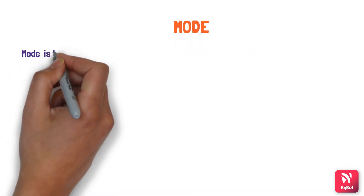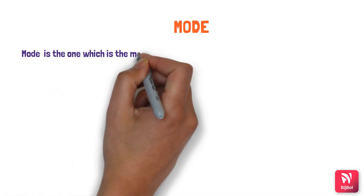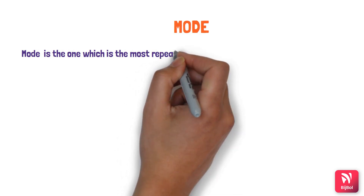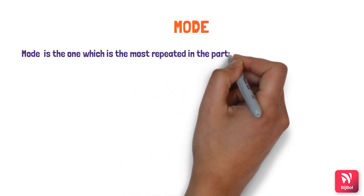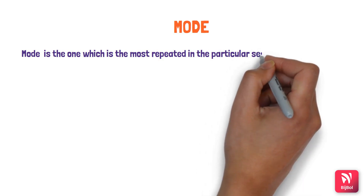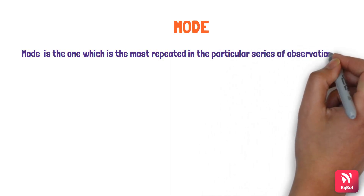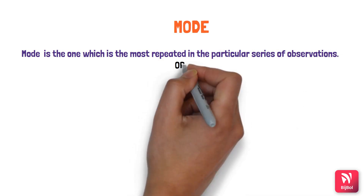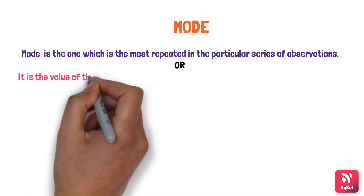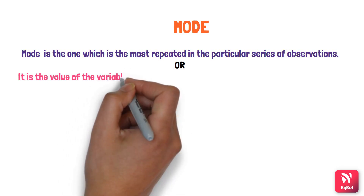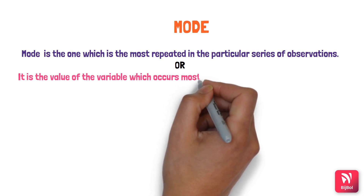The next measure is the mode. The mode is the value that is most frequently repeated in a particular series of observations. It is the value of the variable which occurs most frequently in a series. It is not based on any mathematical calculation but is simply the most frequently observed value.